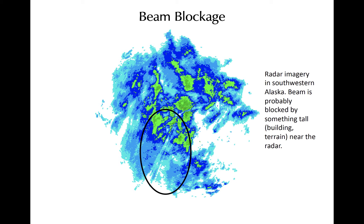Radar sites are generally selected such that beam blockage by structures or trees is minimized. However, in mountainous areas, blockage of the beam at low elevation angles is sometimes unavoidable. This can be partially remedied by placing the radar atop small topographical features, but then the radar shoots over any echo that is located only at low altitudes beneath the radar. This is the case with the radar in the San Francisco Bay Area, which is located high up in the Santa Cruz Mountains.